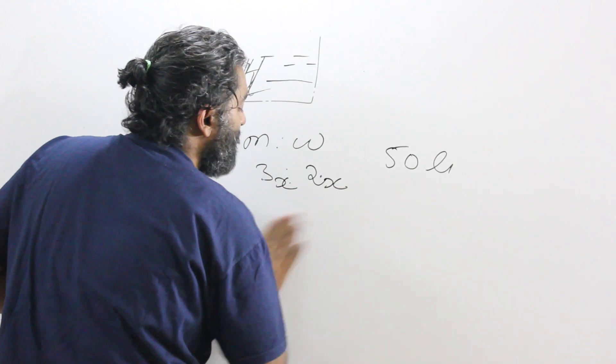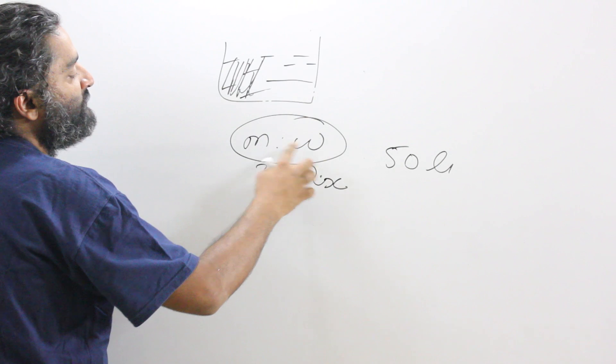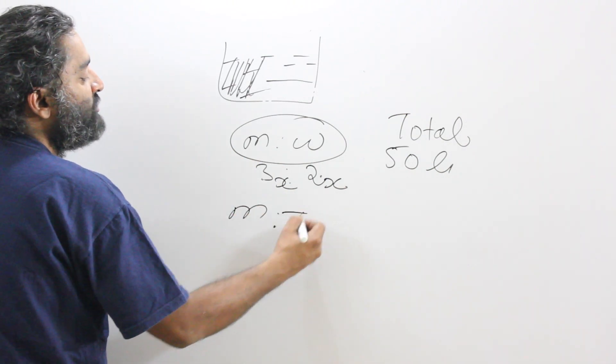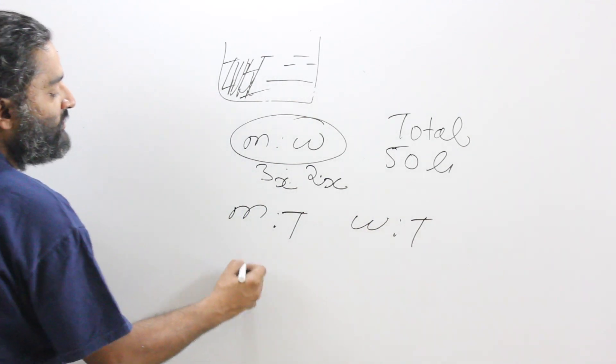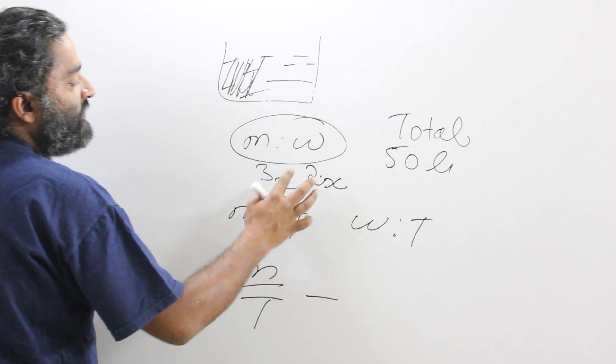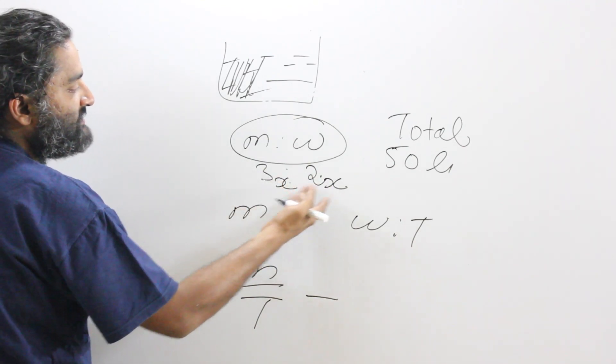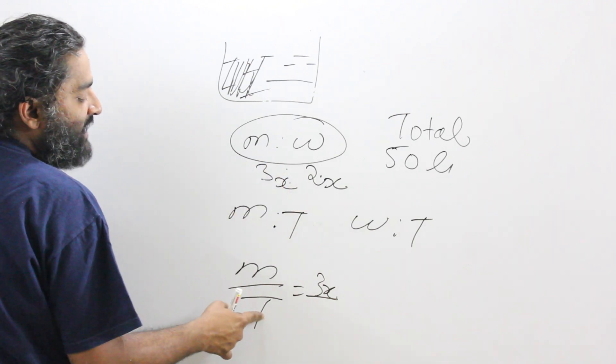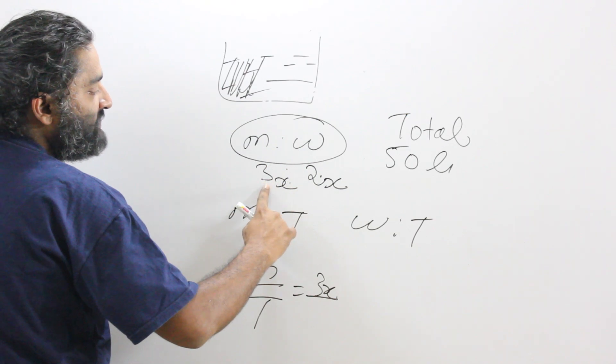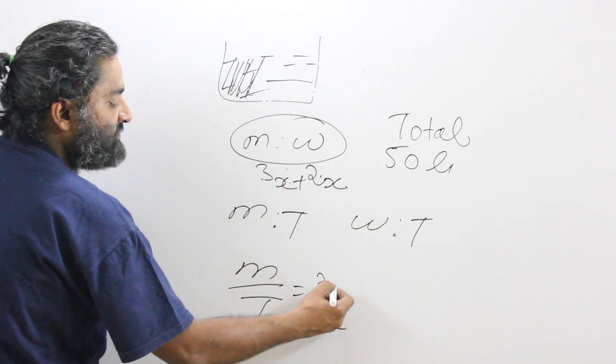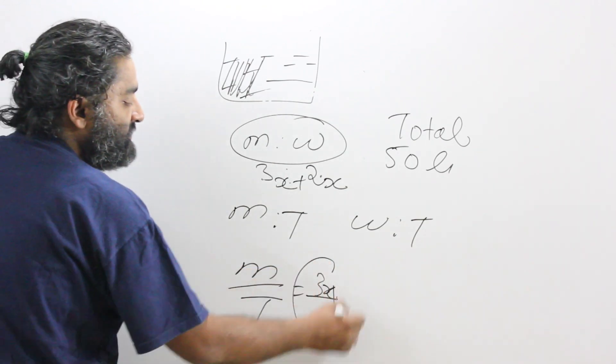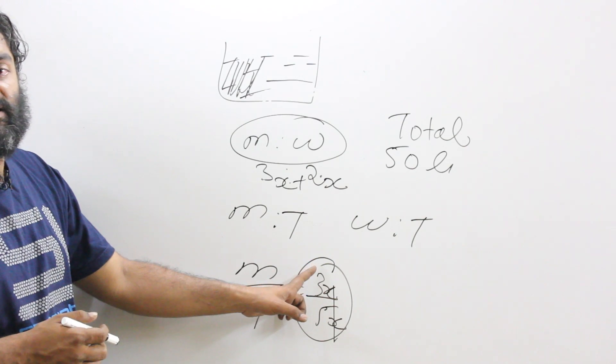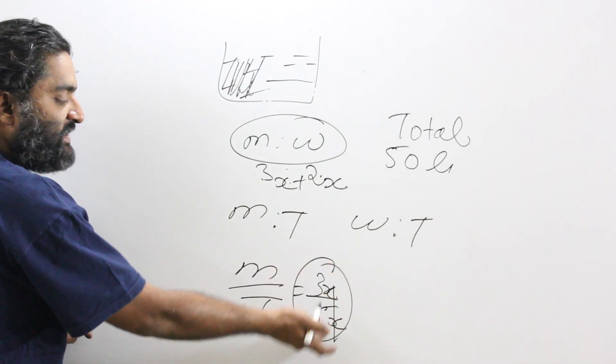Another way of looking at it would be, we have been given a relationship between milk and water and also another term which is the total. Can we establish a relationship between milk and total? Our quantities were 3x and 2x. So milk would be 3x, and the total would be 3x plus 2x which is 5x. So milk by total is 3 by 5. What does this mean? It means that out of each 5 liters total, there will be 3 liters of milk.